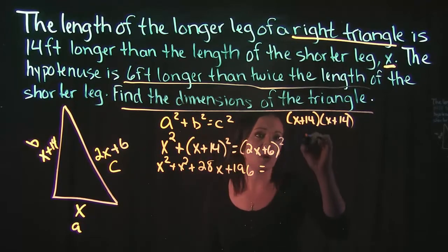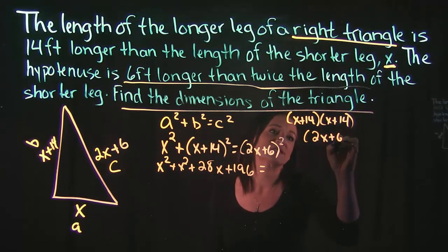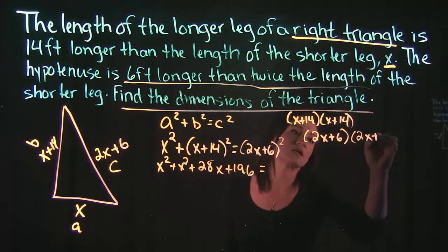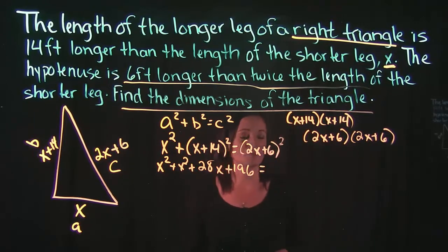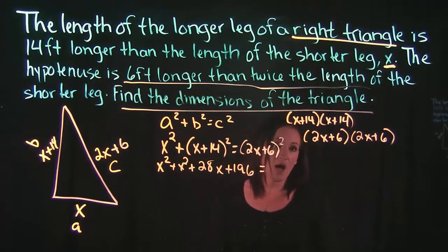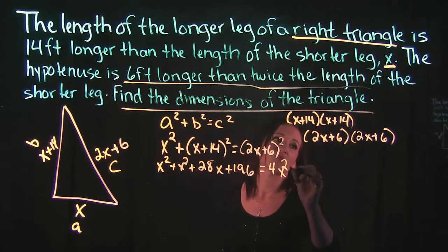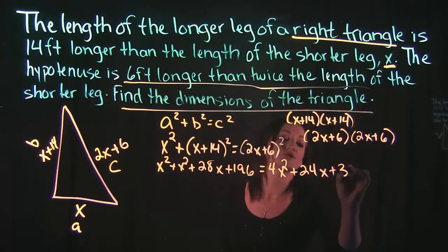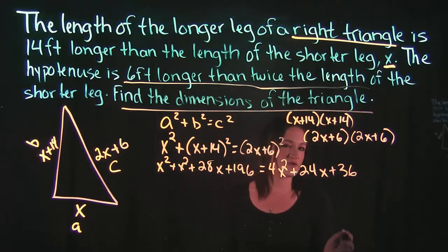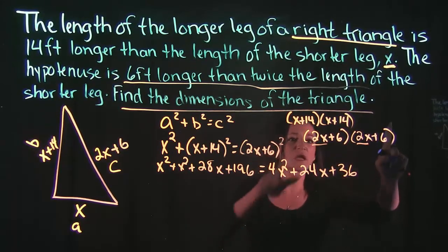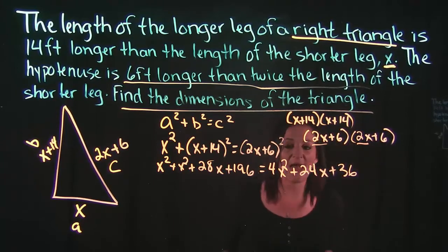And then that's going to equal to what we get when we do 2x plus 6 squared which is 2x plus 6 times 2x plus 6. When we multiply that out we get 4x squared plus 24x plus 36. Alright so all you have to do is FOIL: first times first, outside, inside, and last.